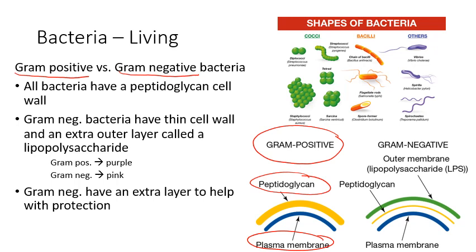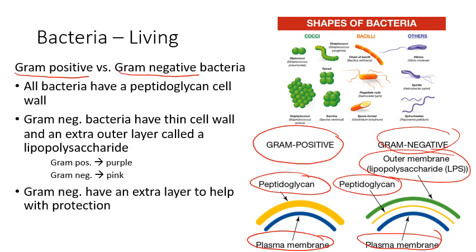Gram-negative bacteria are a little bit more complex. They have their regular plasma membrane that all cells have, they also have that peptidoglycan cell wall, but they actually have a third layer — an outer membrane, an outer shell — that offers them an extra layer of protection. It also gives them an extra function which we'll talk about in the next slide. The key takeaway is the difference between gram-positive and gram-negative: gram-positive have two layers, gram-negative have three.